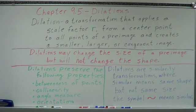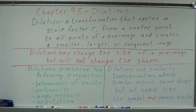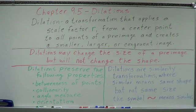The last transformation we're going to deal with is called dilations. We've dealt with three of them: reflections, translations, and rotations. Those three are known as isometries or congruence transformations. Dilations are a little bit different. There's not a whole lot to dilations — they're fairly simple. We need to know a lot of vocabulary, so I'm going to read through definitions and rules, then we'll do some examples.